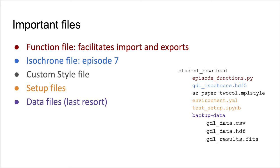The episode_functions.py file contains functions that learners will write throughout the workshop. This file enables them to import these functions at any time, allowing for a quick start at any episode. GD1_isochrone.hdf5 is the isochrone file used in episode 7 to identify the main sequence of GD1. The az-paper-2-col.mpl style is the matplotlib style file used in episode 8 as an example of creating a custom style. The environment.yml file is used in the setup to create a conda environment for the workshop.